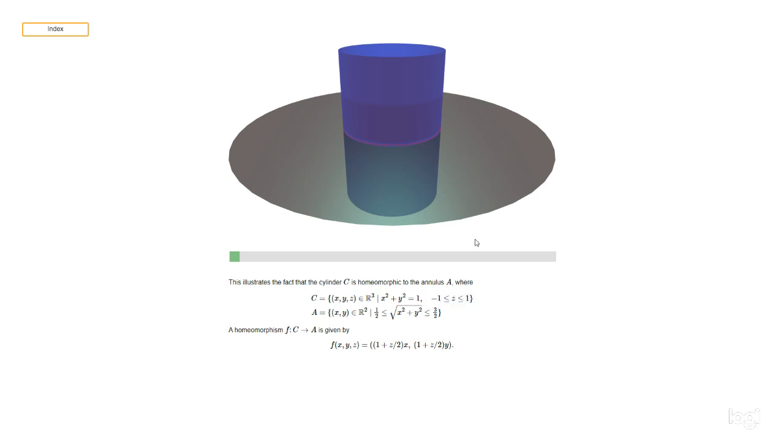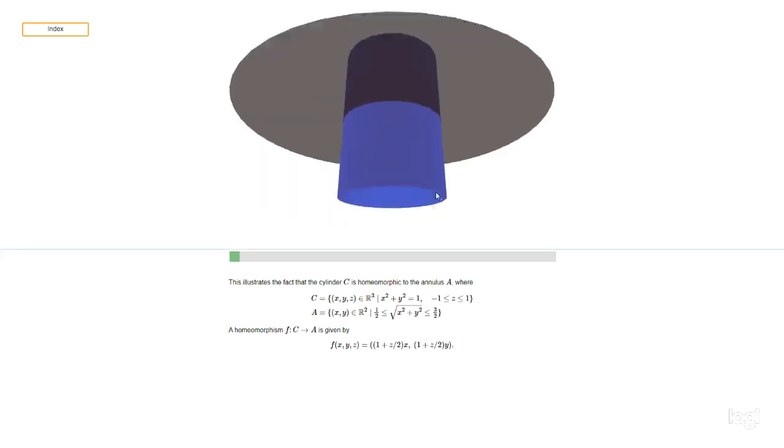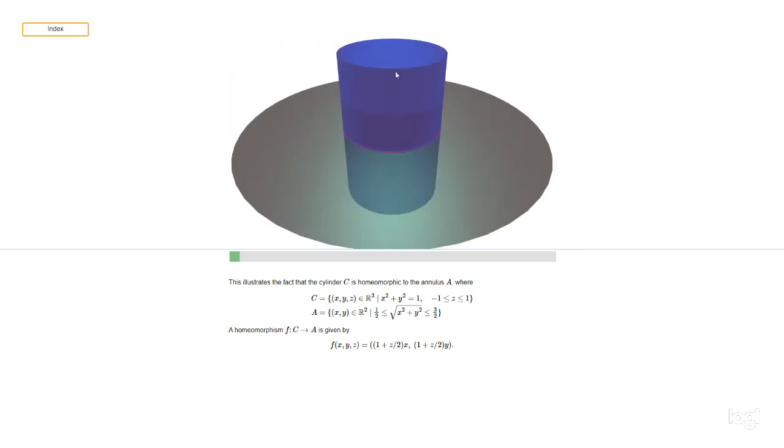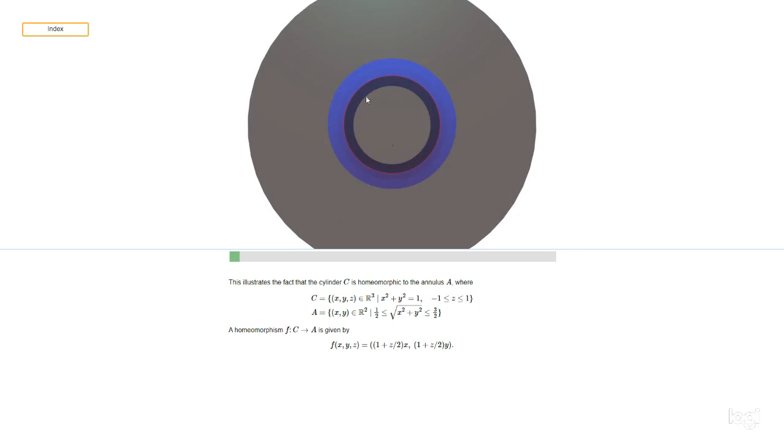And then the minus one less than or equal to z less than or equal to one says that we're between height minus one and height plus one. So this end of the cylinder here is at z equals minus one, this end of the cylinder here is at z equals plus one, and we're always at a distance one from the z-axis.